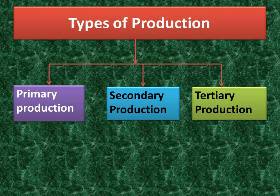Primary production examples: industries like agriculture, forestry, fishing, mining, and oil extraction. They extract the gifts of nature from the earth's surface, from beneath the earth's surface, and from the oceans.